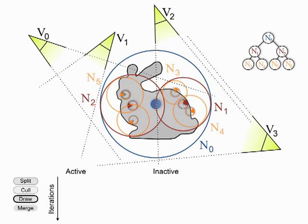Then, we proceed in a number of iterations in which a single fine-grained computation is carried out. Split, cull, draw, or merge.